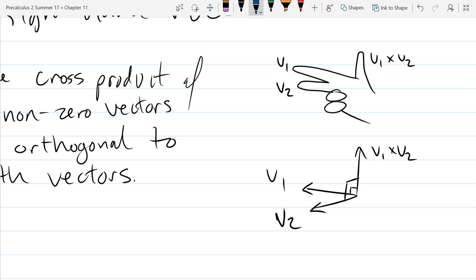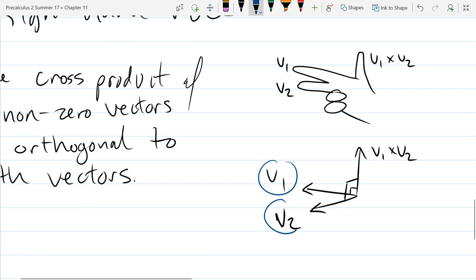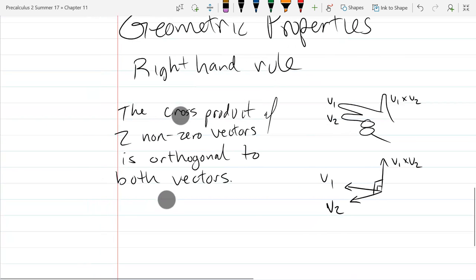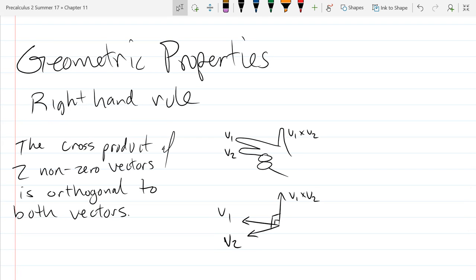What would happen here in the plane if you swap v1 and v2? The cross product would point the opposite direction, or downwards, directly out of the plane. So that's our geometric property of the cross product.